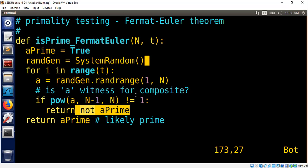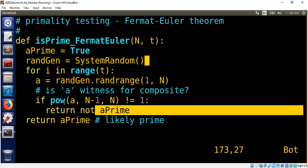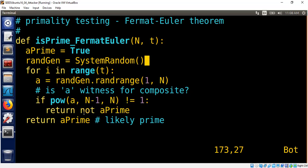Suppose let's assume this is false. In that case, we don't know. Meaning if this value is 1, we don't know yet. So we continue t times. After that, we give up and then say, yeah, the number is likely to be a prime. Because we didn't find a witness that will satisfy this property. That's basically the idea of Fermat-Euler theorem.